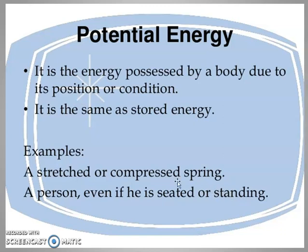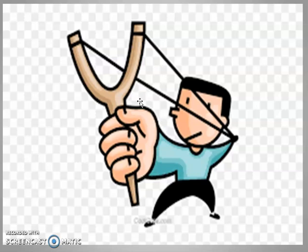If a person is standing in one place and not doing any movement, then what energy is in it? It is potential energy. Look at this catapult — the energy is stored in it. Until the stone has not been released, it remains stored energy, which is called potential energy.